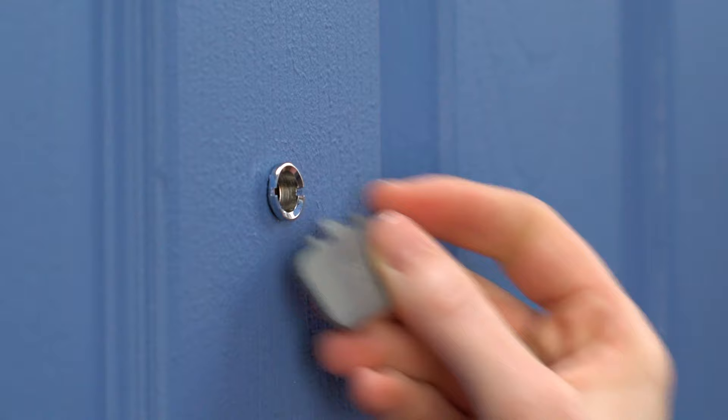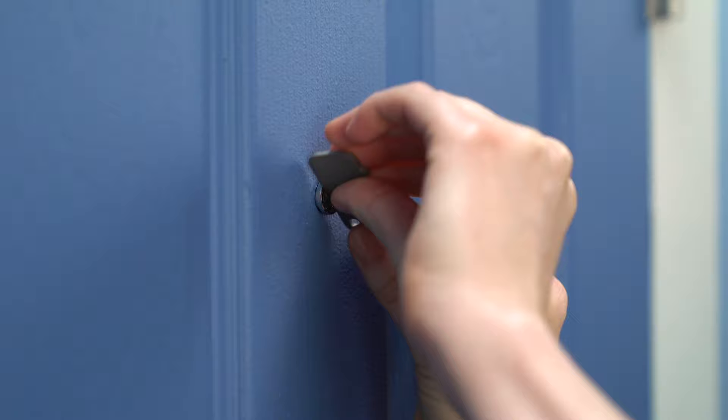Next, we'll use the peephole key to unscrew your peephole. Place the flat edge into the slots and rotate counterclockwise. Once it's loose, you can unscrew and remove it by hand.